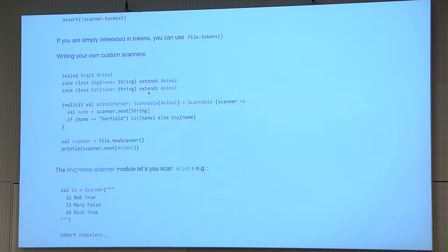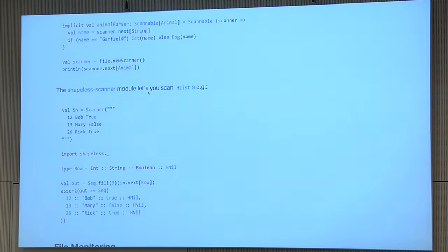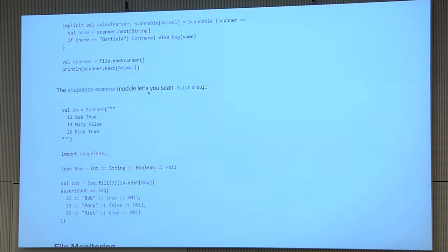There's also a shapeless-based scanner — not in the core library but built on top of it, following the philosophy that the core should not depend on any other library. This lets you scan HLists. If you have data you define as an HList of Int, String, Boolean, you can scan a row and get back the typed result.